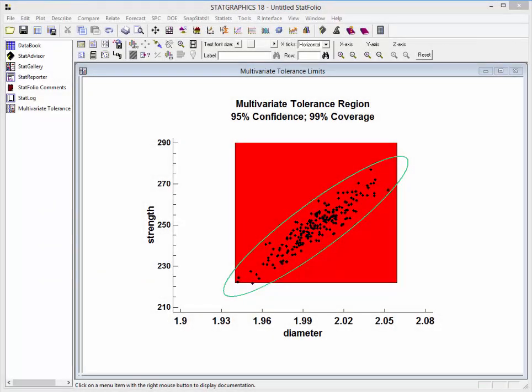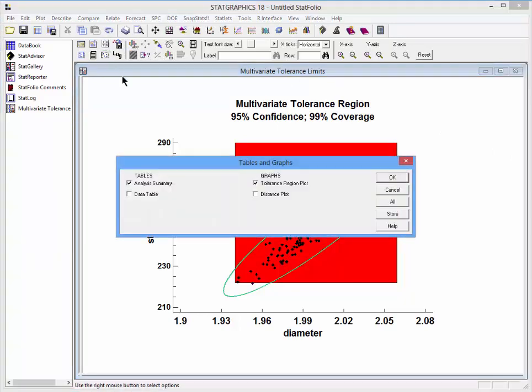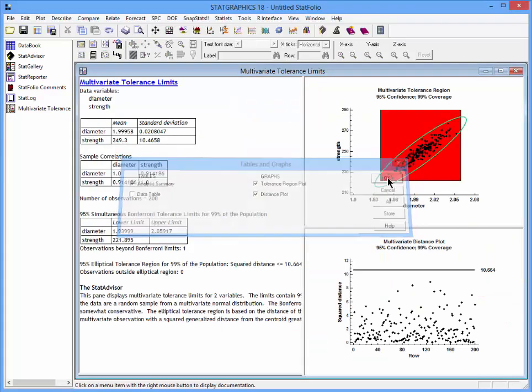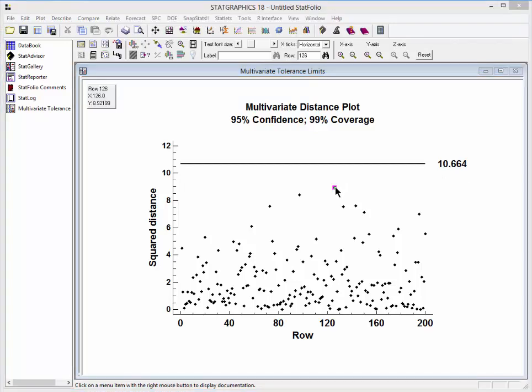Returning now to StatGraphics 18, I'll go up to the list of tables and graphs on the analysis toolbar and ask for a distance plot. This will plot those squared generalized distances. Notice that in this case, they're all less than c, which turned out to be 10.664. If there were unusual observations, you can always put your left mouse down and determine what row they are in the file. In this case, the one farthest from the centroid is row 126.